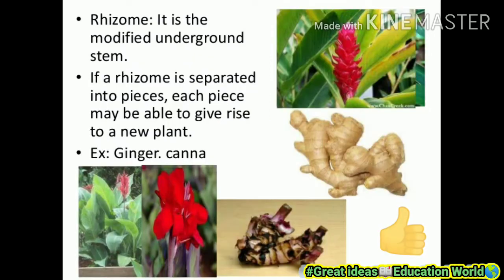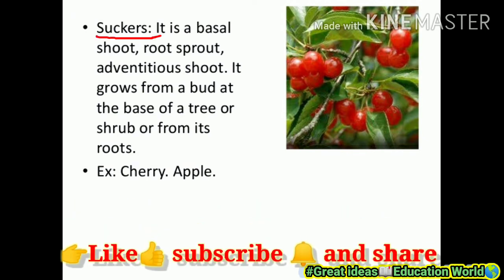Next is rhizome. It is a modified underground stem. If the rhizome is separated into pieces, each piece may be able to give rise to a new plant — as in ginger and canna. Next is sucker. It is a shoot that grows from a bud at the base of a tree or shrub, or from its roots, with adventitious shoots. Example: cherry and apple.